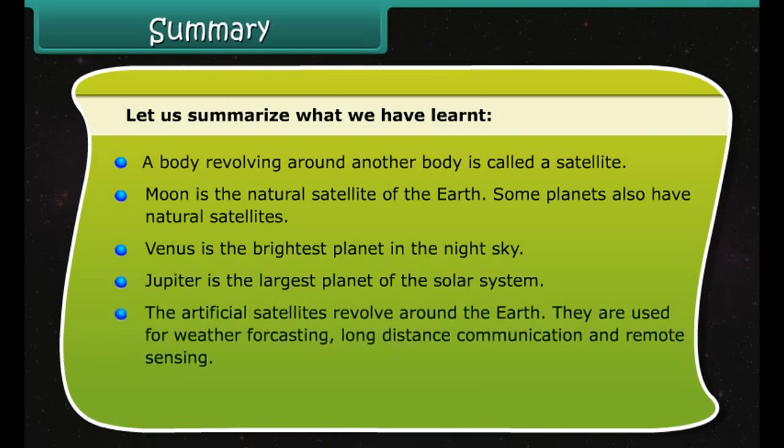A comet is a collection of gas and dust which appears as a bright ball of light in the sky with a long glowing tail. The tail of a comet always points away from the Sun.